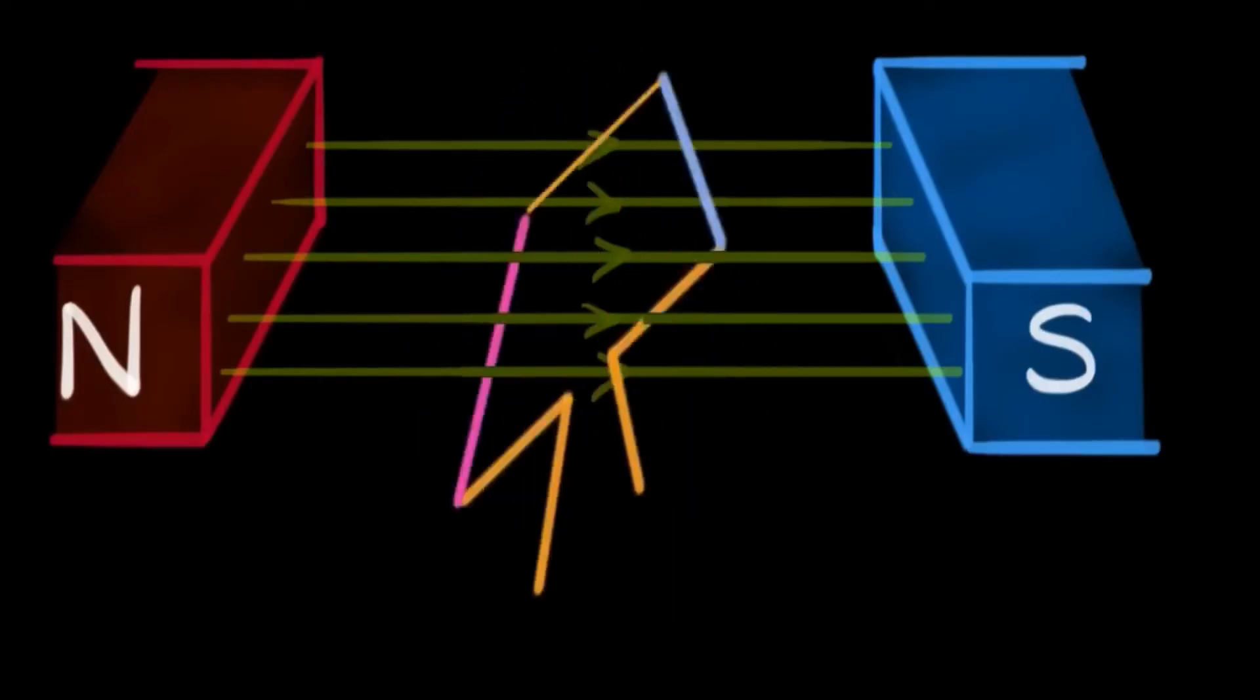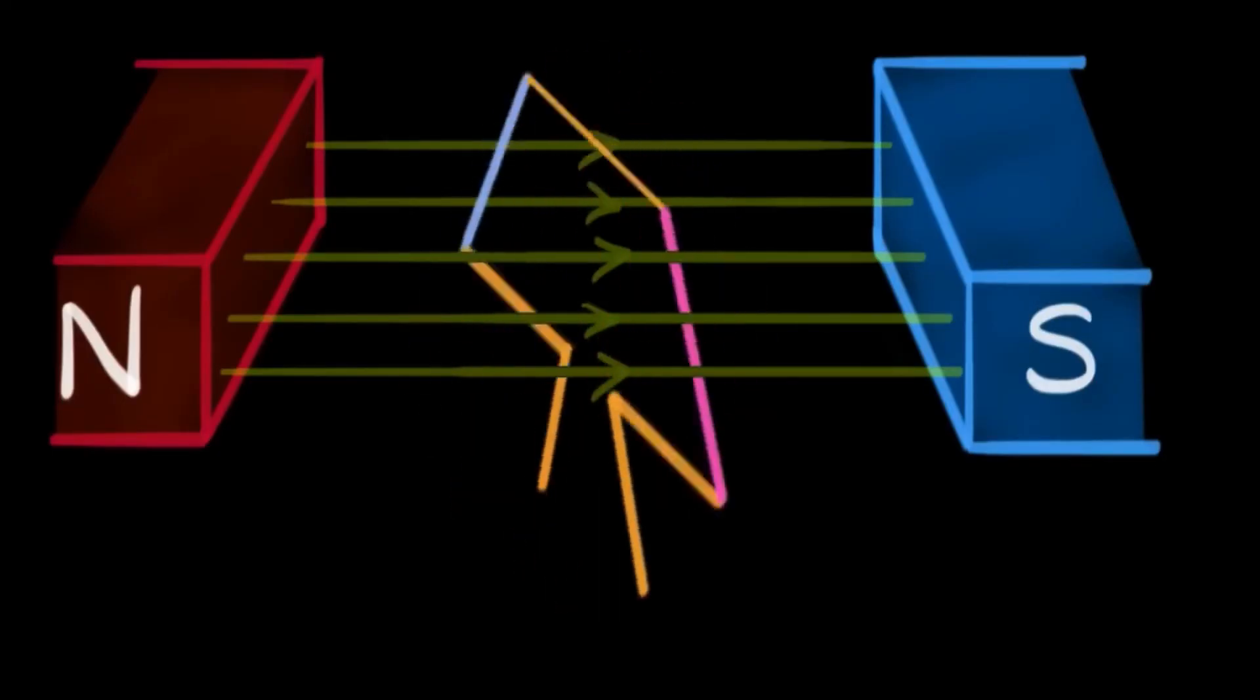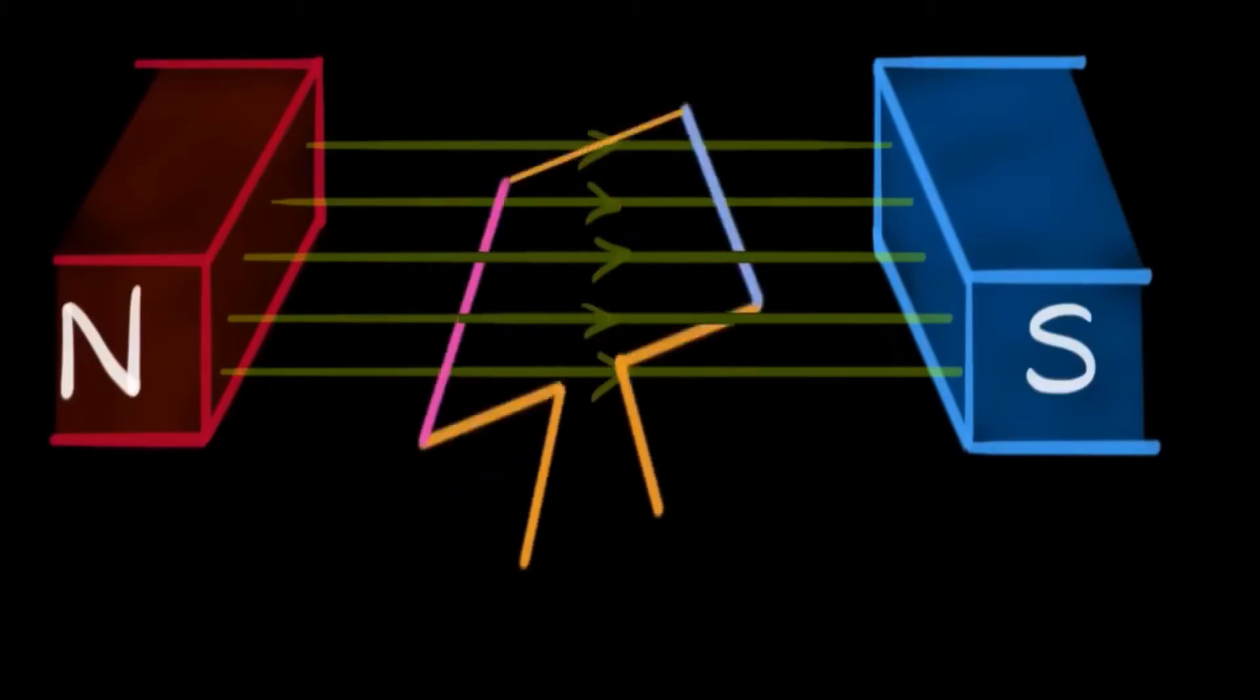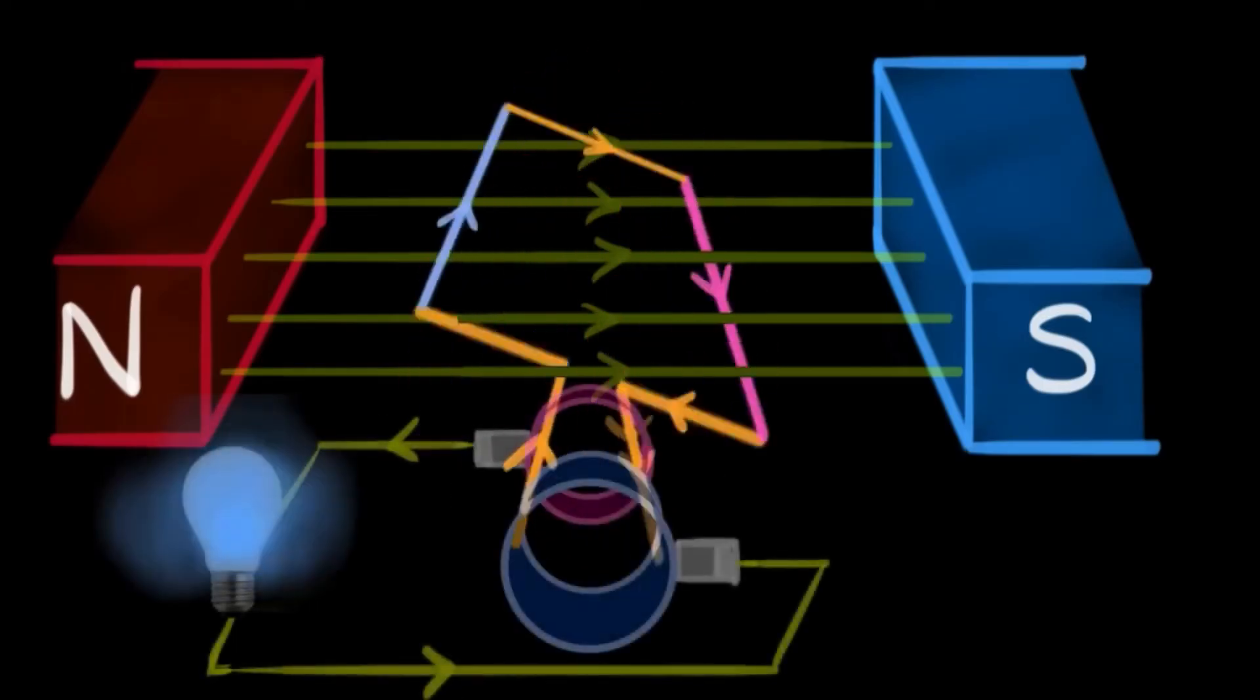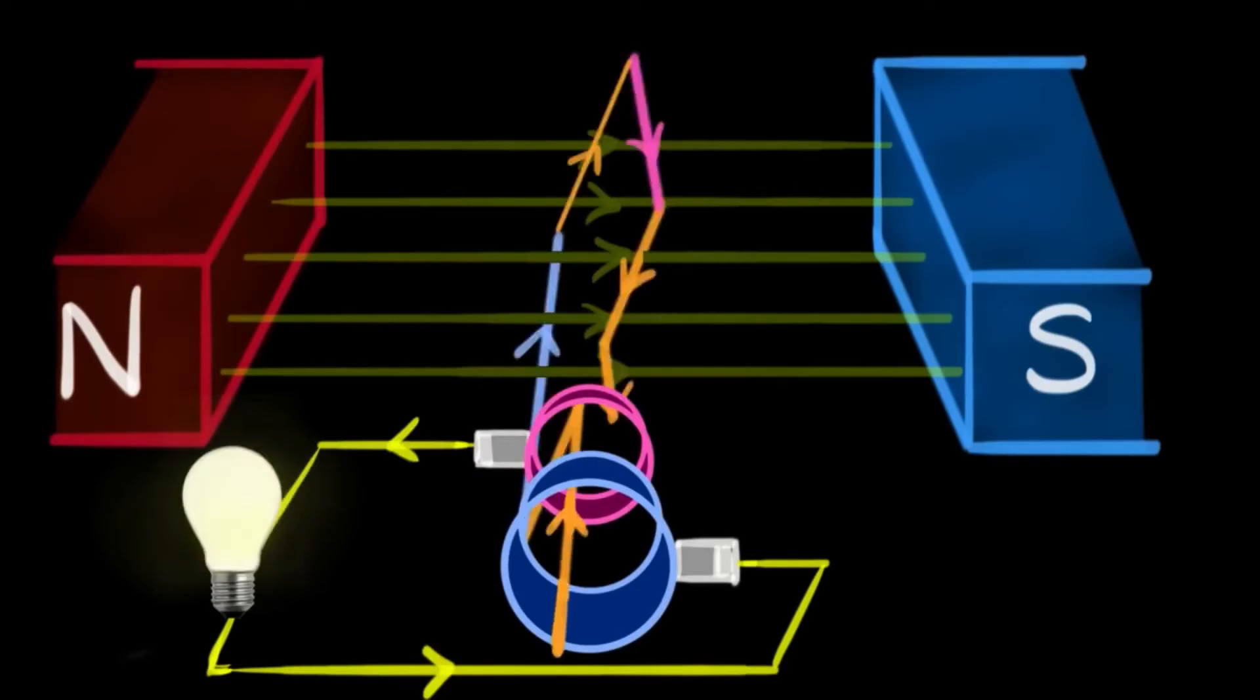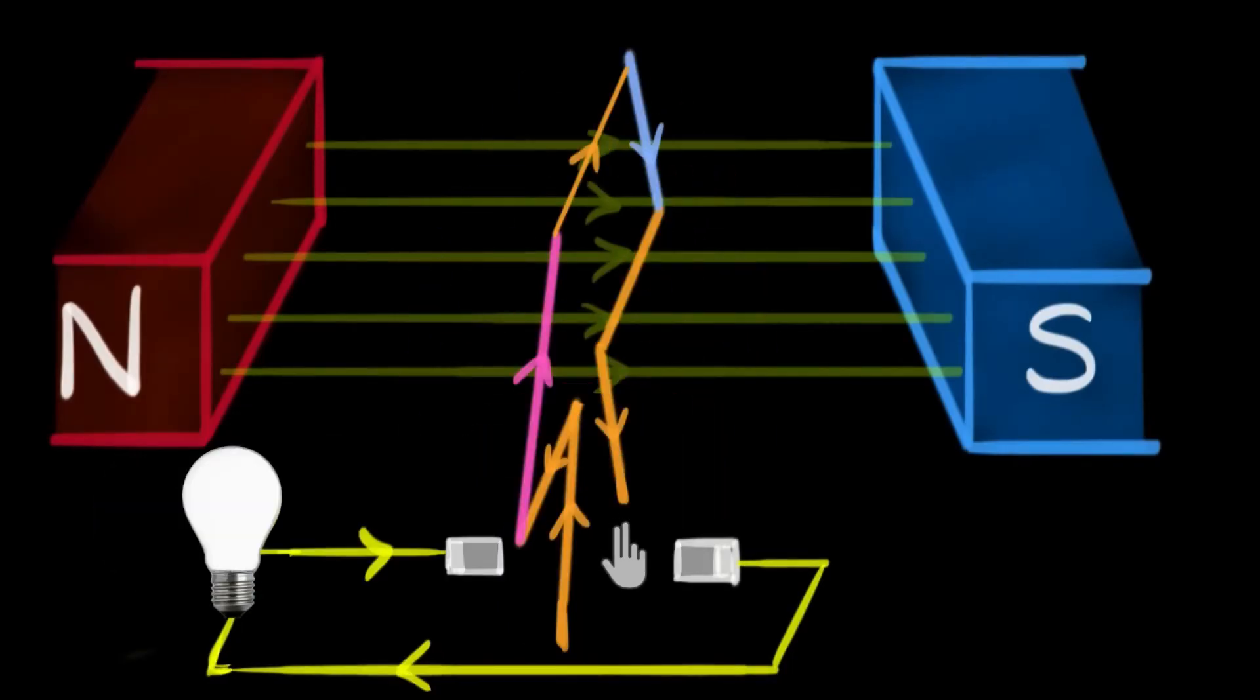As the armature continues to rotate, the induced EMF in each conductor alternates as it moves under different magnetic poles. The total induced EMF in each coil of the armature winding is the sum of the EMFs induced in its individual conductors.